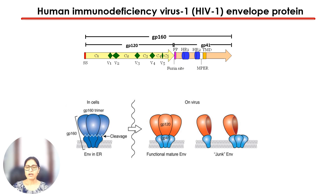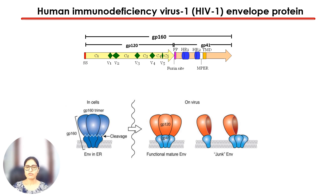There are several other non-functional or junk envelope forms such as monomers, dimers, or just GP41 stumps that are also present. These non-functional envelopes are the immunodominant forms and act as decoys to divert the immune system away from conserved epitopes, resulting in higher titers of non-neutralizing antibody responses towards these regions.